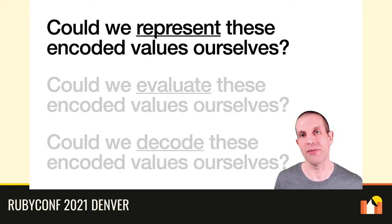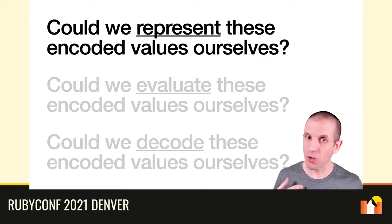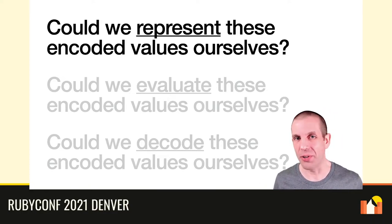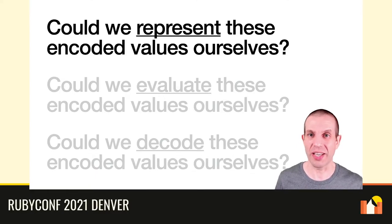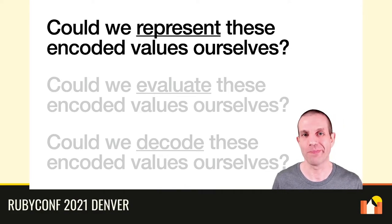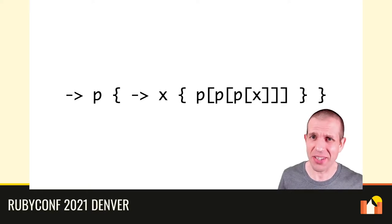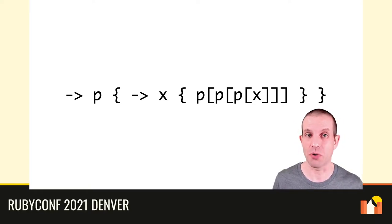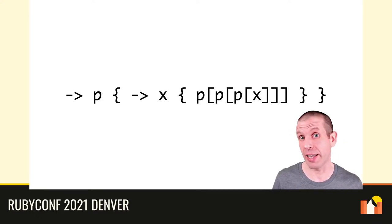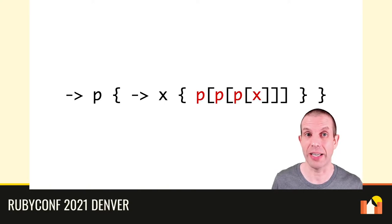So let's start with that first question: could we represent these encoded values ourselves? Can we roll our sleeves up and construct our own honest, hard-working, artisanal data structure to represent encoded values, instead of relying on Ruby to let us use procs to represent whatever we want? Well, yeah, I think we probably can, because let's think about some arbitrary Ruby value encoded as procs. This was our encoding of the number three.